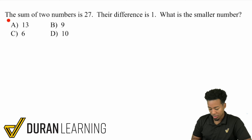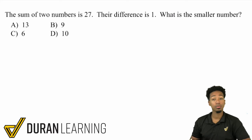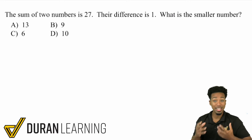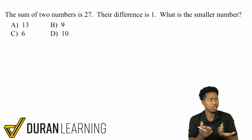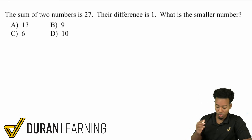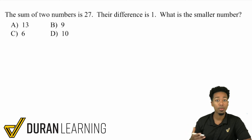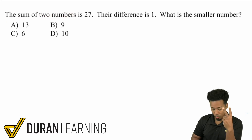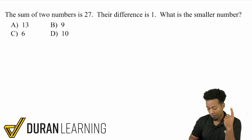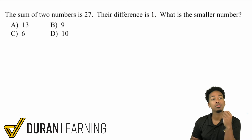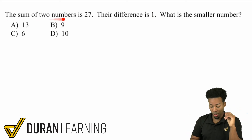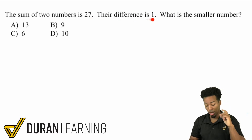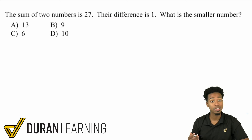We have three questions in this video. So the sum of two numbers is 27, their difference is one. What is the smaller number? You know you're dealing with a system when you have two different relationships with two different variables. One relationship is that their sum is 27, and the other is that their difference is one. Two unknowns, two relationships — that's how you know you have a system.